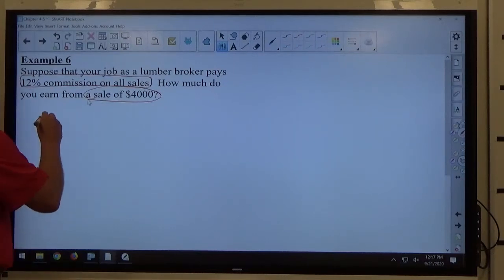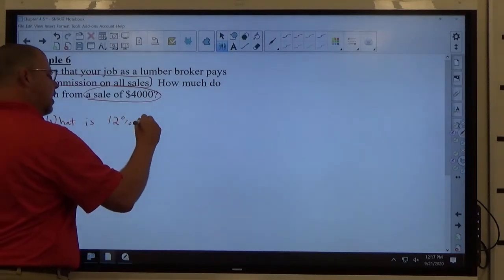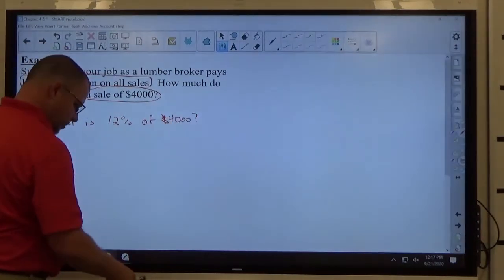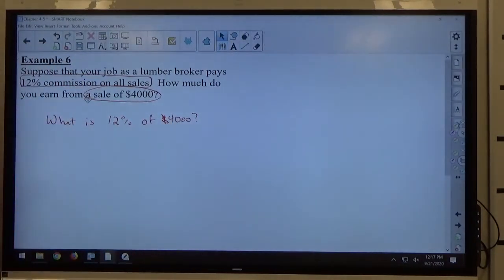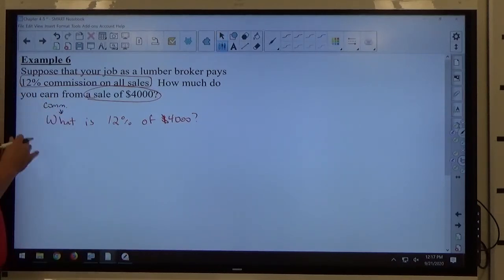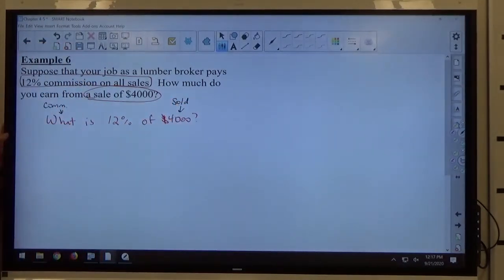So, what is 12% of $4,000? Anytime you're working on commission, the commission that you're earning is the what part? It's the part. And what you sold is the whole part.